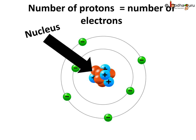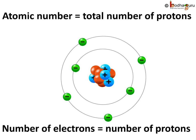The neutrons do not have any charge. The total number of protons present in the nucleus of an atom is known as the atomic number of an element. The atoms of different elements have different numbers of protons. For example, all carbon atoms have 6 protons and all calcium atoms have 20 protons. Also remember, the number of electrons in a neutral atom is equal to the number of protons.